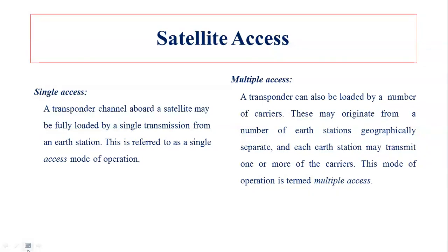The second method is multiple access. A transponder can also be loaded by a number of carriers. We will have more number of earth stations. These may originate from a number of geographically separate earth stations, and each earth station may transmit one or more carriers. So a transponder may respond to a number of carriers — it can be loaded by number of carriers and will respond to number of earth stations.